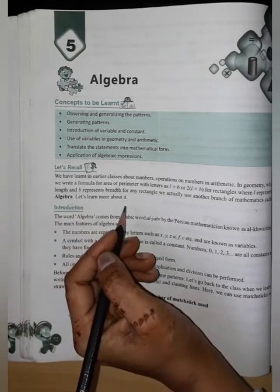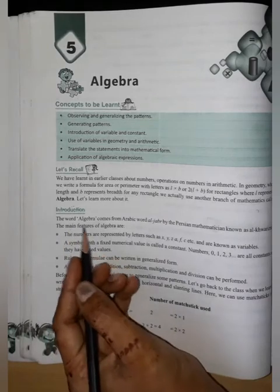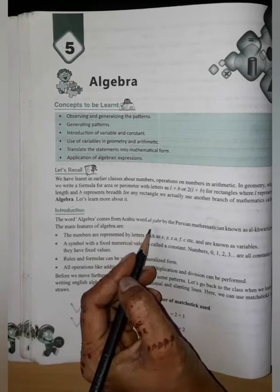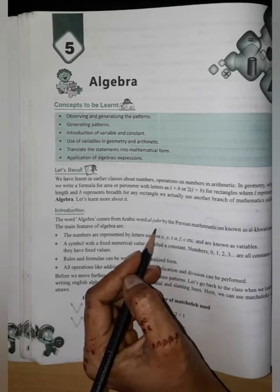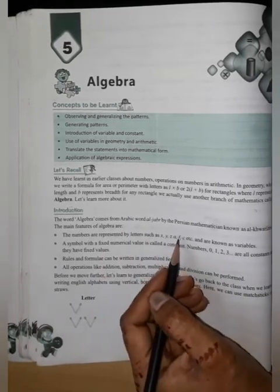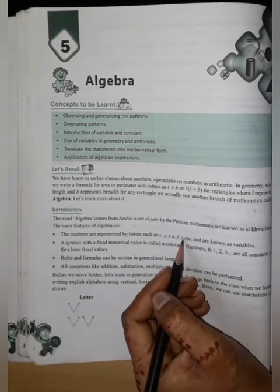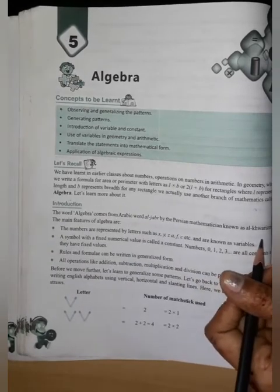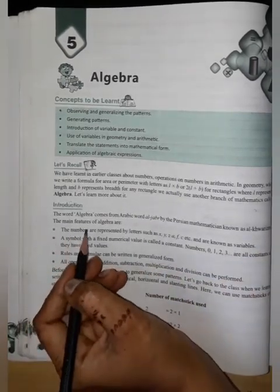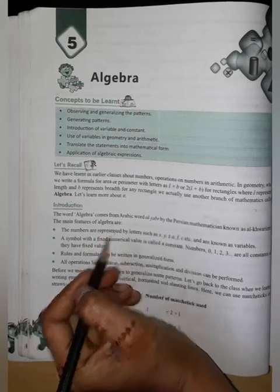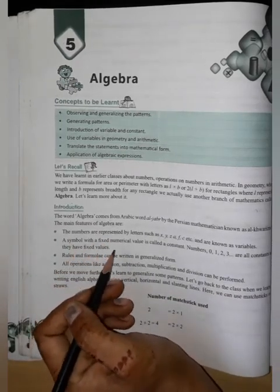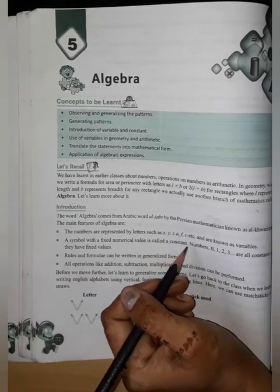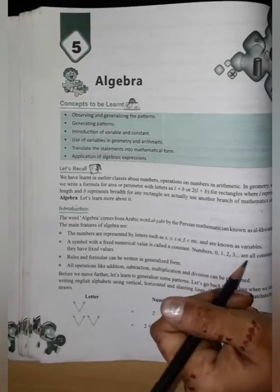Let's learn more about it. The word algebra comes from Arabic words by the person mathematician known as Al-Khwarizmi. The main features of algebra are the numbers are represented by letters such as X, Y, Z, A, B, C and are known as variables.